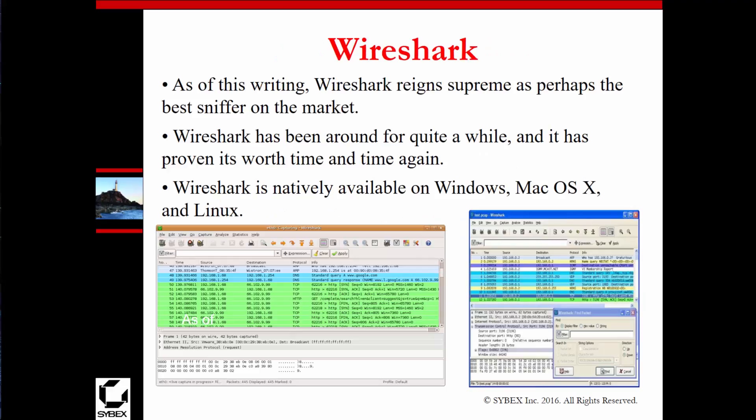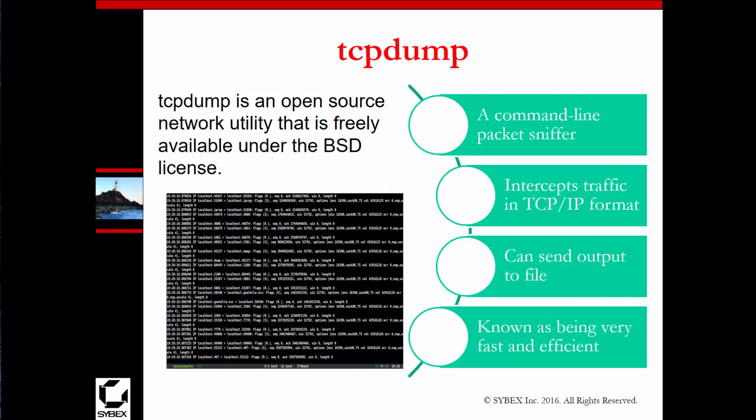Wireshark is color coded and modern. You can get it on pretty much any operating system and you can filter traffic. TCPdump, while it normally works in Linux, is more of a command line tool — not as pretty. You can pipe everything to a file to analyze, but it's not as robust as Wireshark.